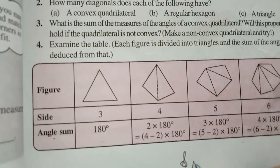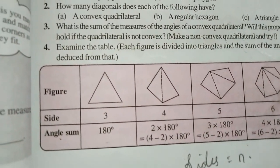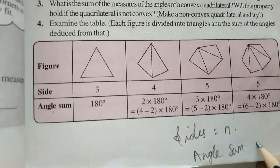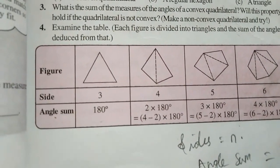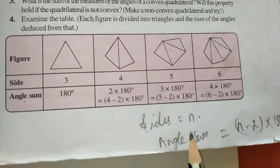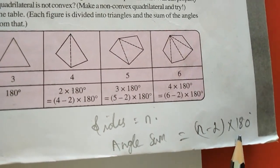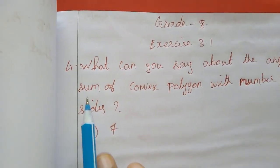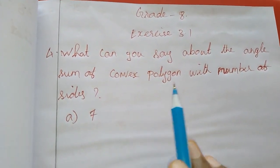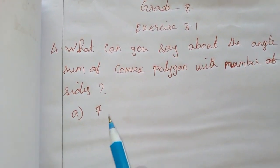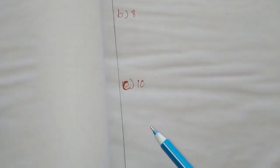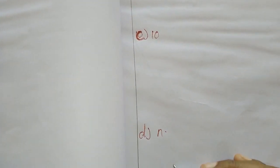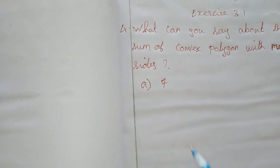So if the number of sides equals n, in the angle sum property, angle sum equals n minus 2 into 180 degrees. This is what you can say about the angle sum of a convex polygon with n sides. So for 7, 8, 10, and n — I am going to do for c and d; you have to do a and b. A and b is homework for you.